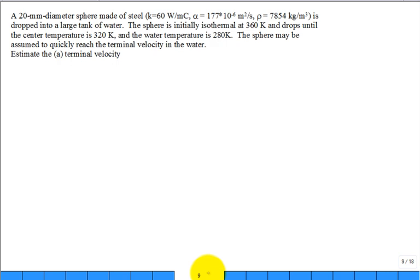Solve a problem. We have a 20-millimeter diameter sphere. It's made of steel. There's the thermal conductivity, thermal diffusivity, and the mass density of steel. It's dropped in a large tank of water. The sphere is initially isothermal at a given temperature. It drops until the center line temperature has changed from 360 to 320, so it's cooling off. It's a hot sphere falling through water. And the water temperature, because it's a large bath, a large tank of water, stays constant at 280. So there's our three temperatures. The initial temperature of the sphere, the final temperature of interest of the center of the sphere, and the water temperature far in the large bath that doesn't change. The sphere may be assumed to quickly reach the terminal velocity in the water. What do you mean by the terminal velocity?